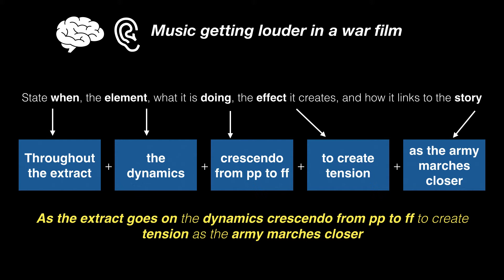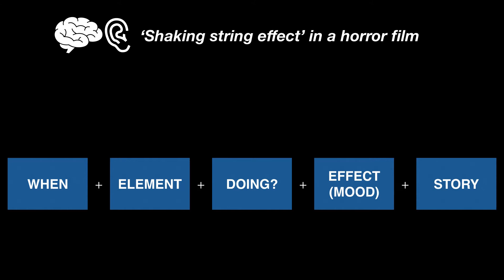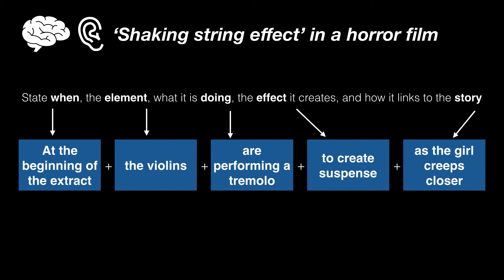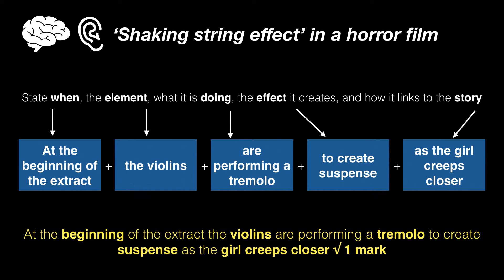Now I'm imagining a kind of shaking string effect in a horror film, following the same structure. At the beginning of the extract, the violins are performing a tremolo — that's that shaking technique; it's a word you can learn. This creates suspense as the girl creeps closer. That sentence is worth one mark, as is the one we did before.